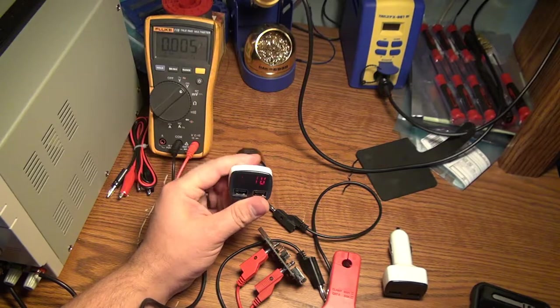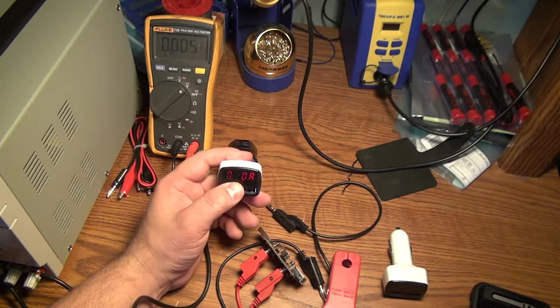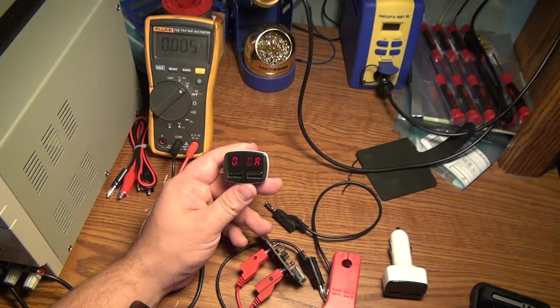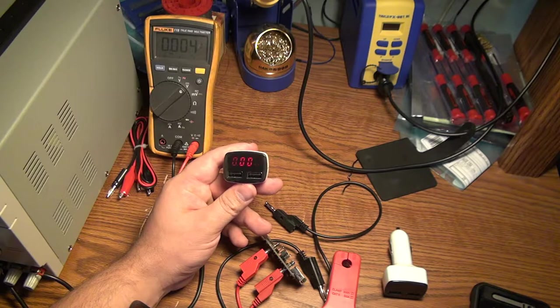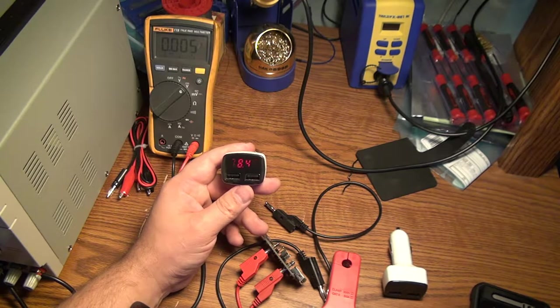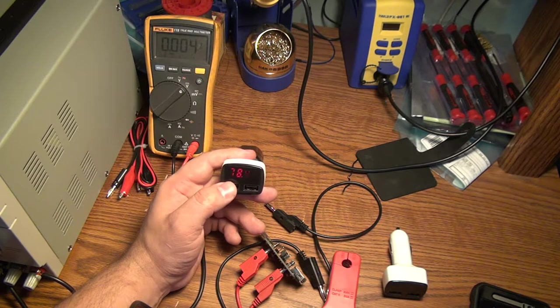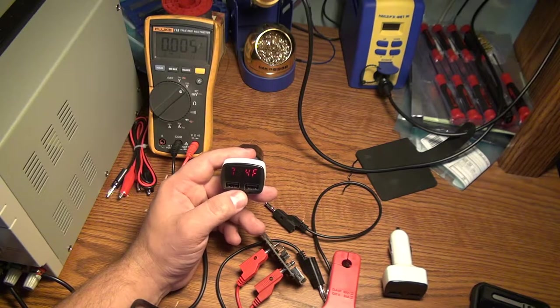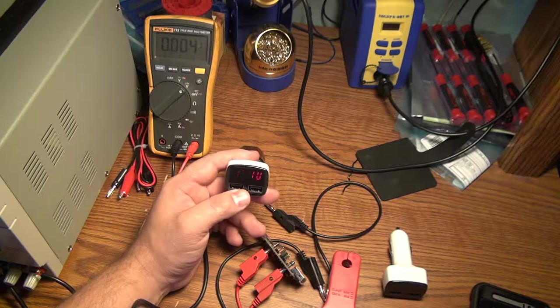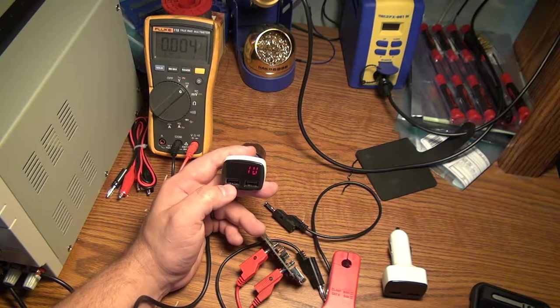First it shows you the voltage. Right now it's using zero amps, and the multiplexing on this display makes it kind of rough to show up on camera. It also shows you temperature, going back and forth between 78 degrees and 80 degrees. My thermostat is set to 72, so that's already a ding against it.